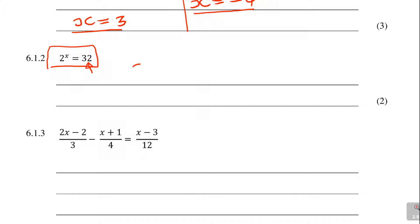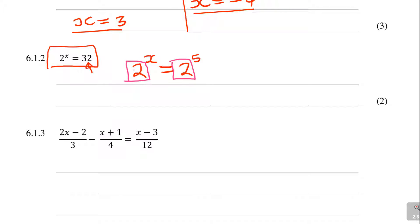So what you'll have is 2 to the power of x is equal to 2 to the power of 5. Once you see the bases matching — 2 and 2 — it also means the exponents are equal. So x is also equal to 5. Then you get your 2 marks.